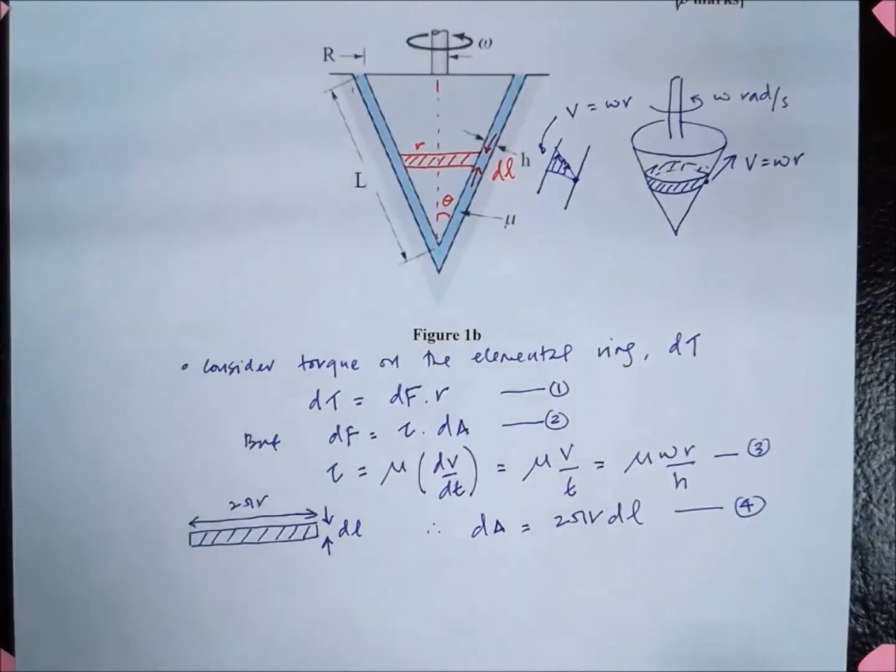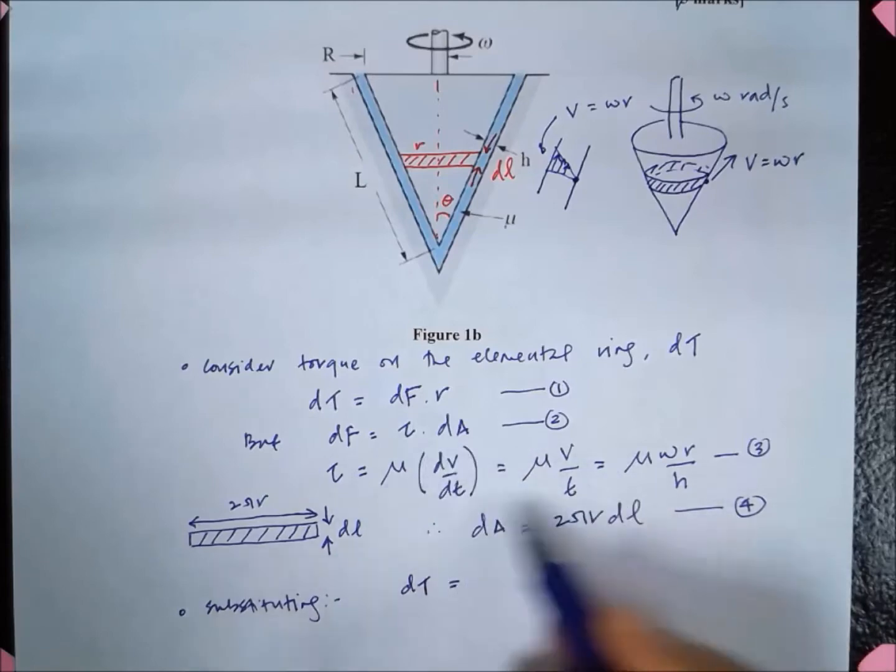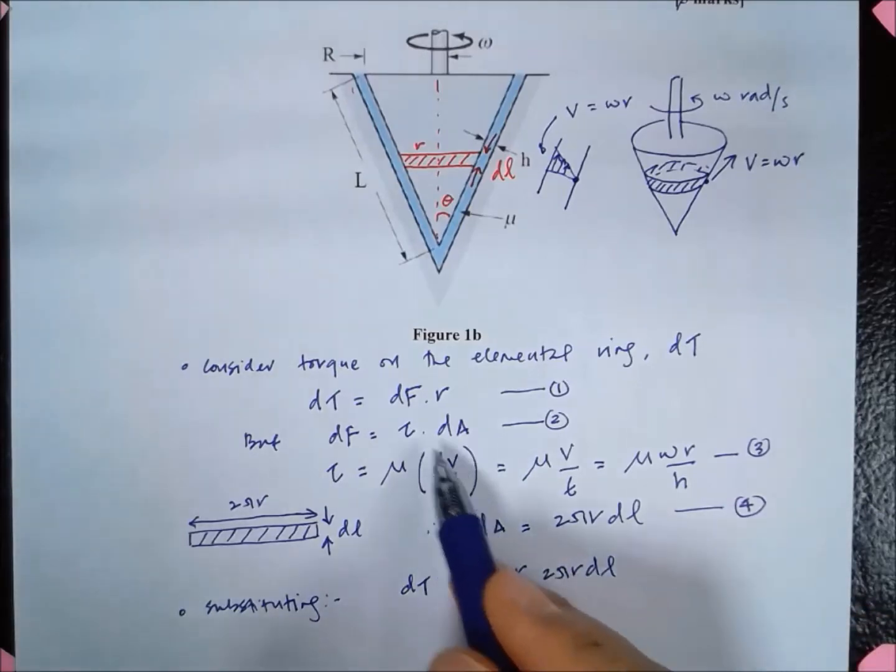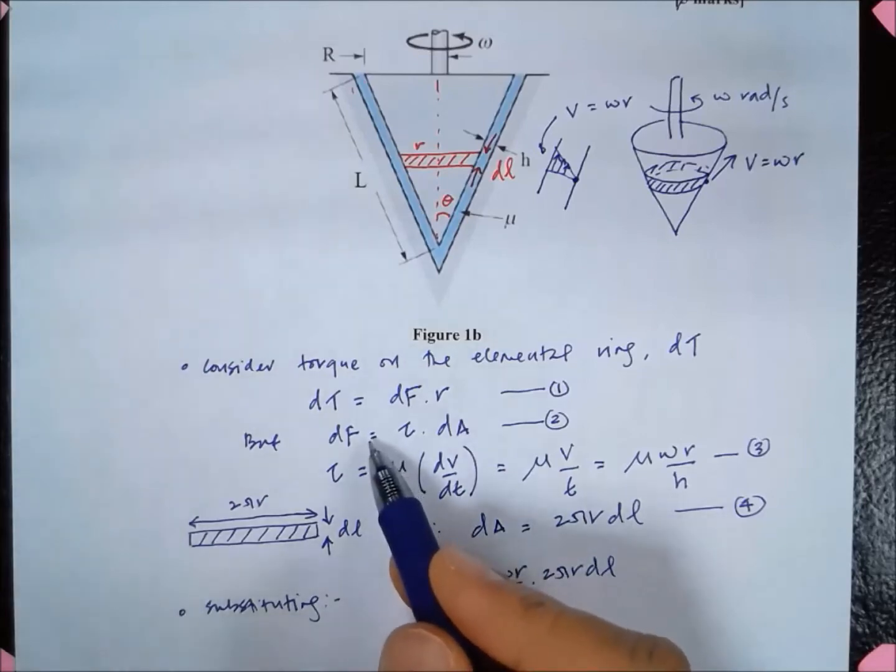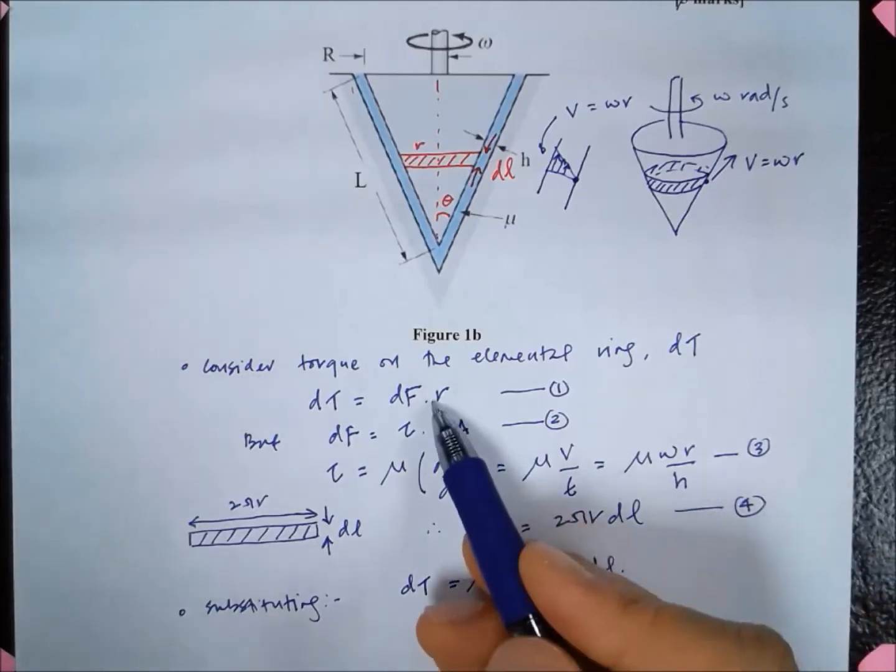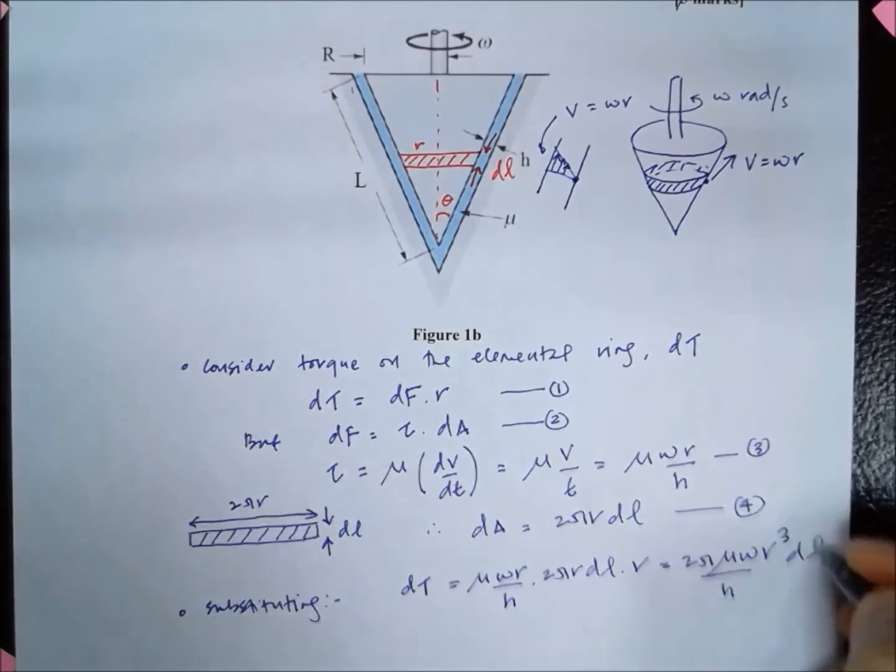If we substitute, we have dτ equal to τ, and τ is mu omega r over h, multiplied by A, which is 2πr dl. That gives us dF, then we need to multiply that by this r. That gives us 2π mu omega r cubed over h dl.